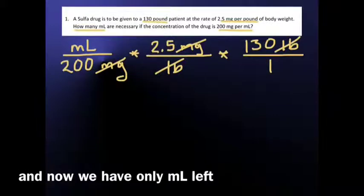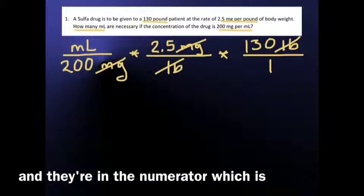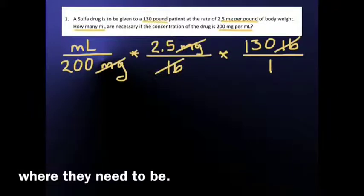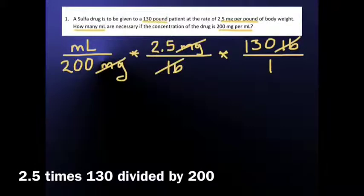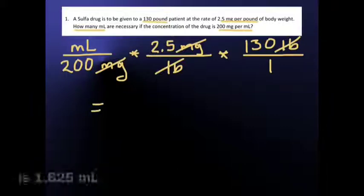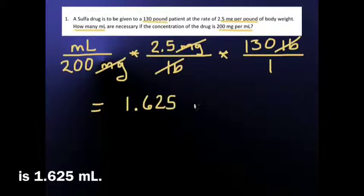And now we have only milliliters left, and they're in the numerator, which is where they need to be. So now we just take care of the numbers. 2.5 times 130 divided by 200 is 1.625 milliliters.